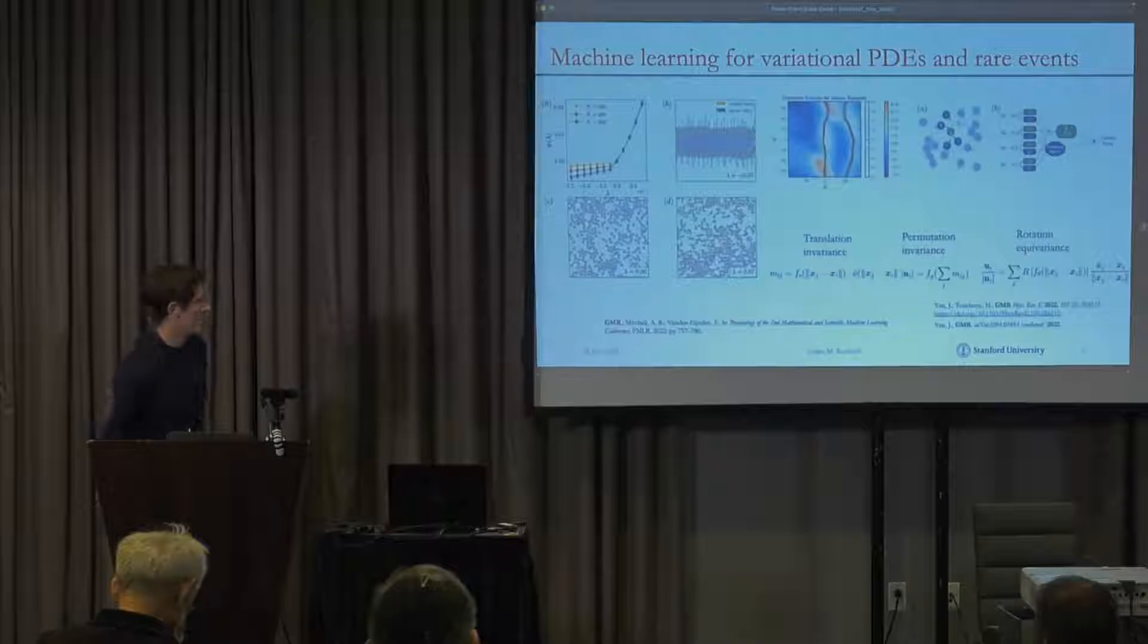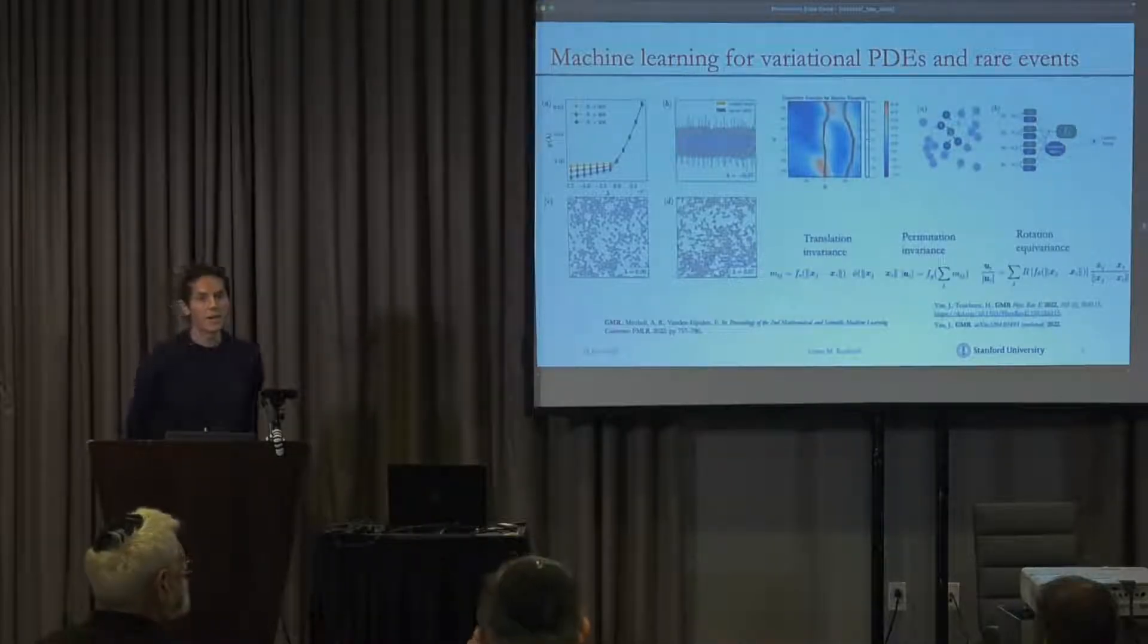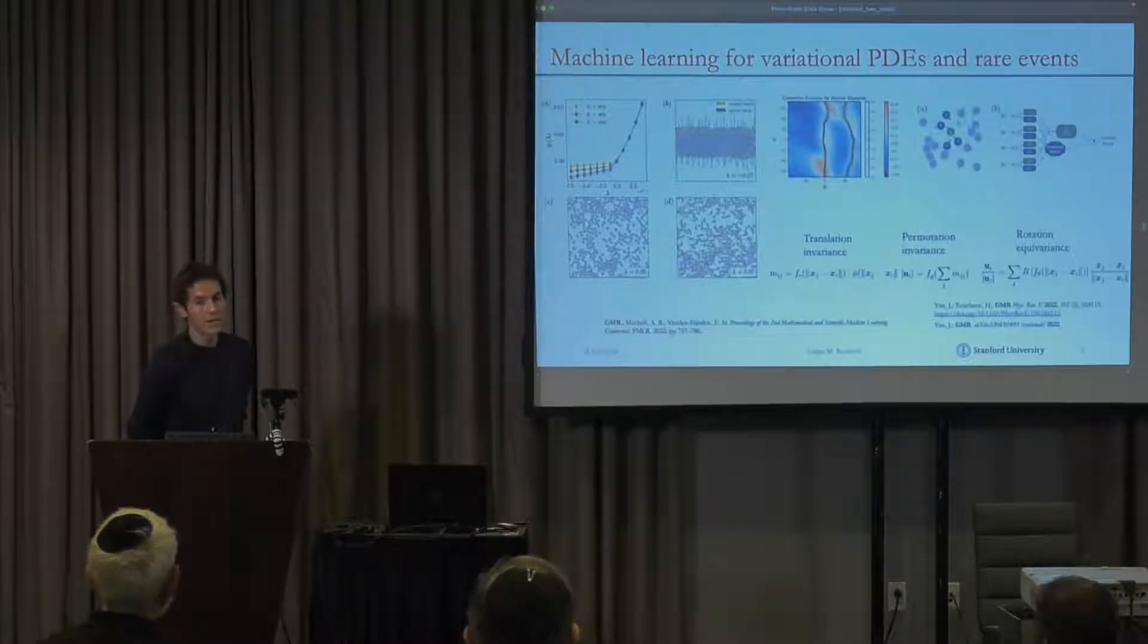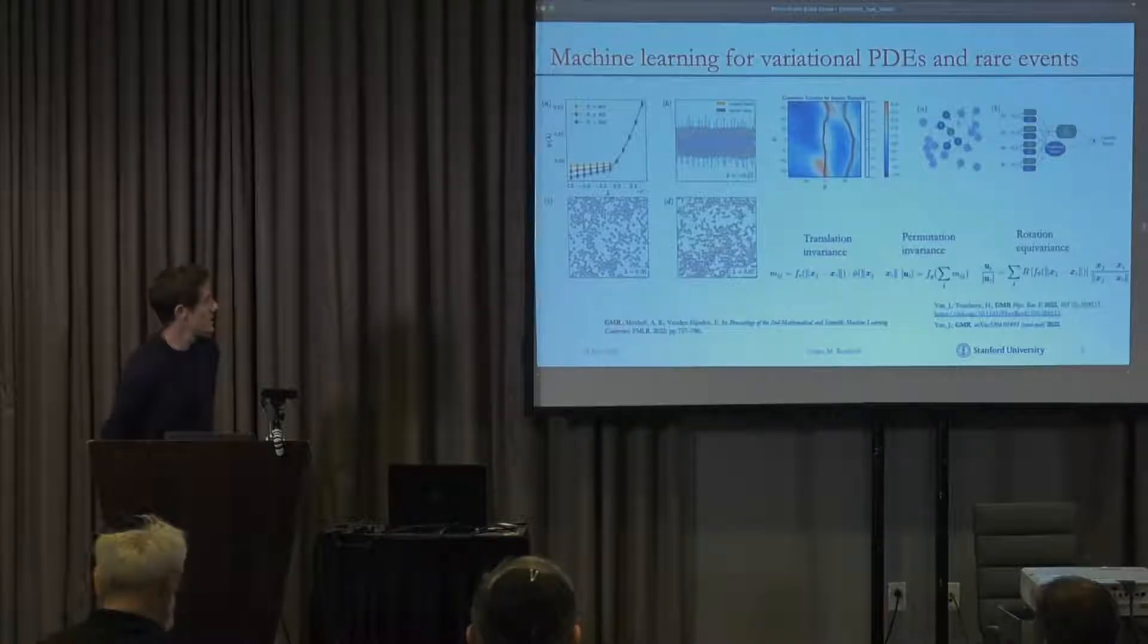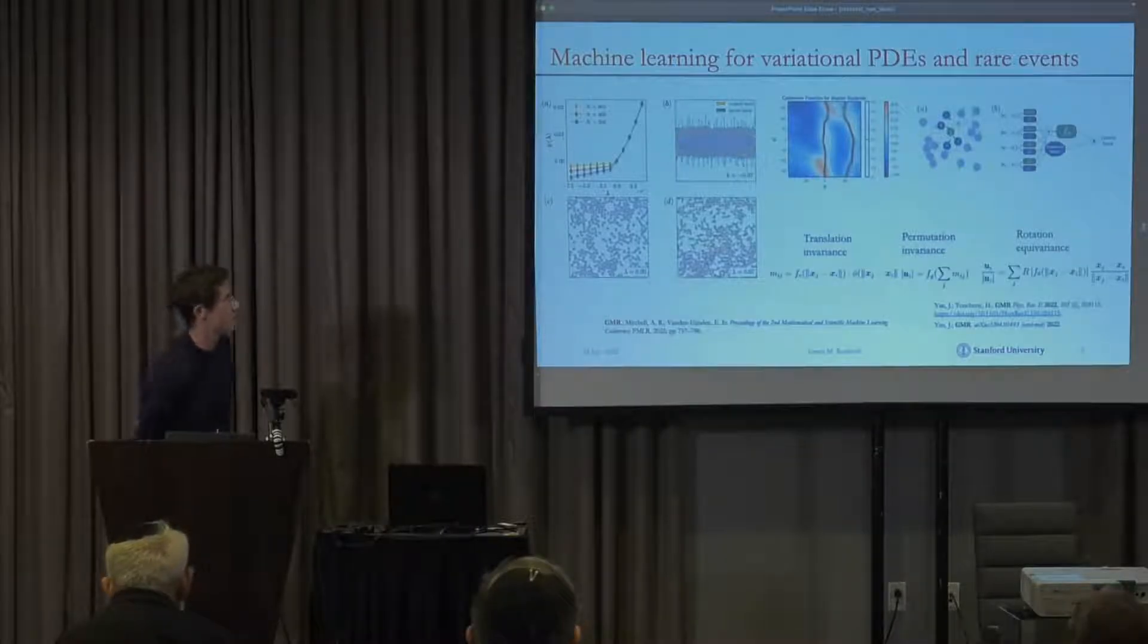The last thing that I'll briefly mention is that we do a lot of machine learning for variational PDEs in the context of rare event sampling. This is something that's used both for equilibrium and non-equilibrium rare events. We've taken a lot of inspiration from the people doing equivariant neural networks to build representations of these sorts of things that are scalable.